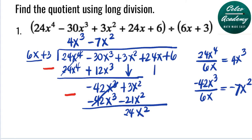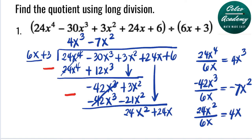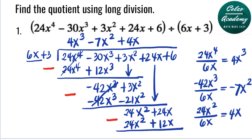We bring down 24x and repeat the process. We divide 24x squared by 6x: 24 divided by 6 is 4, and subtracting the powers gives x to the first. So the third term of the answer is 4x. We multiply 6x plus 3 by 4x: 6x times 4x is 24x squared, and 4x times 3 is 12x. Subtracting: 24x squared minus 24x squared is 0, and 24x minus 12x is 12x.